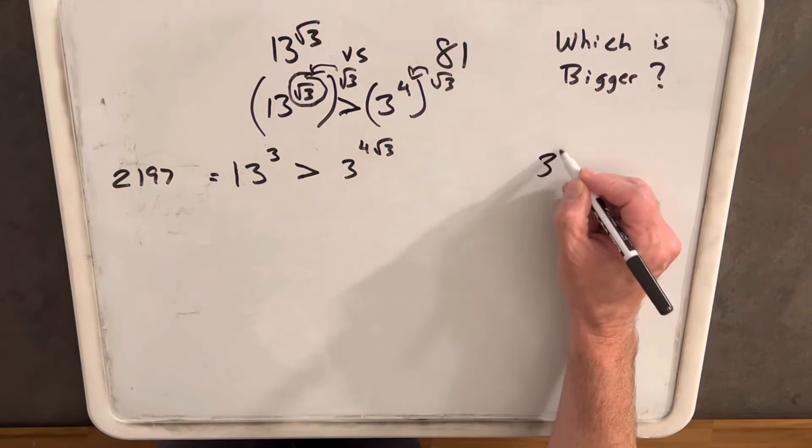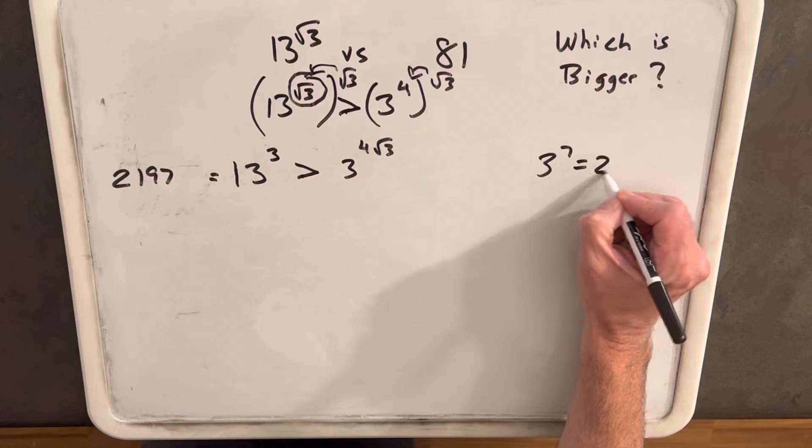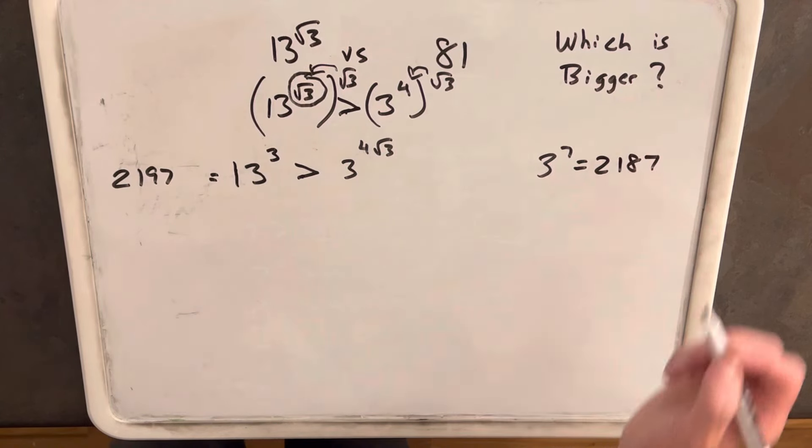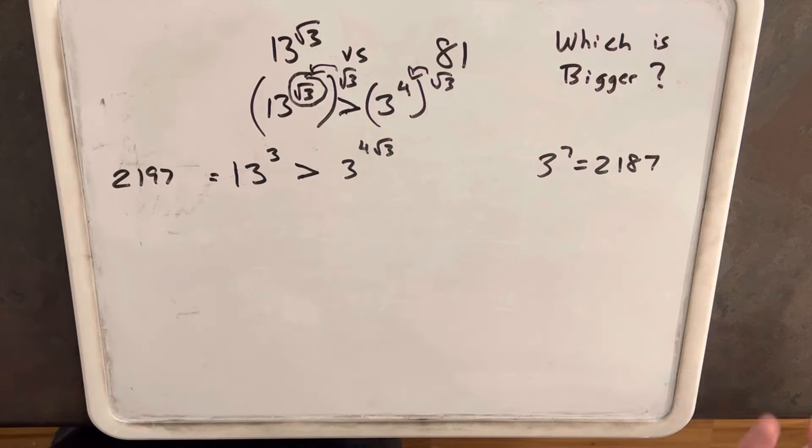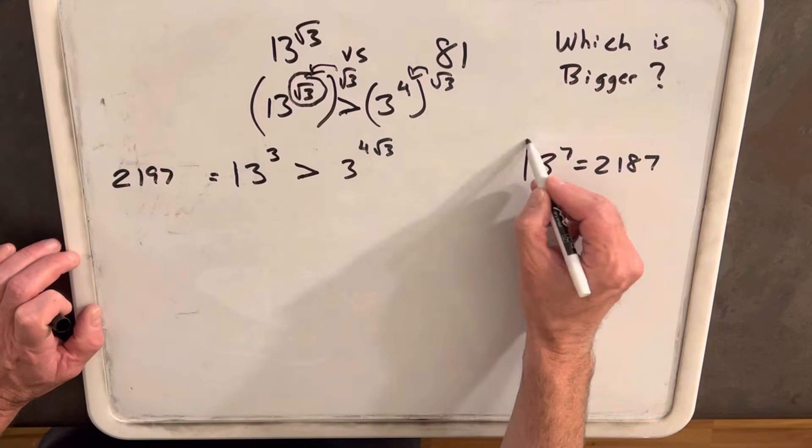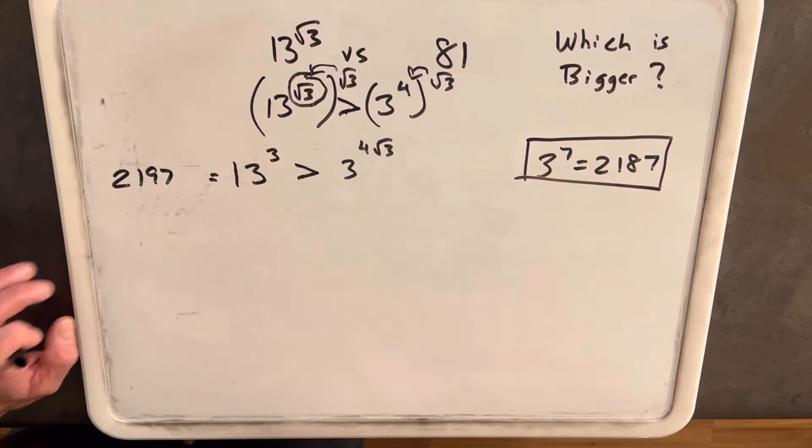And we'll want to notice that 3 to the 7th equals 2,187. How do you know that? Well, just probably from doing a lot of these problems. So using this value over here, let's use this as our comparison point.